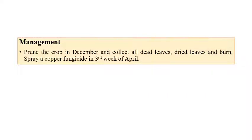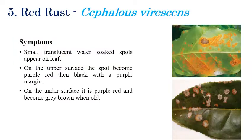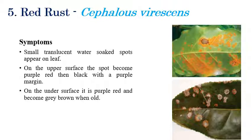For management of black rot, pruning of the crop in December, collection of all dried leaves and burning is very efficient. Spraying of copper oxychloride in the third week of April can also give efficient management against this disease.